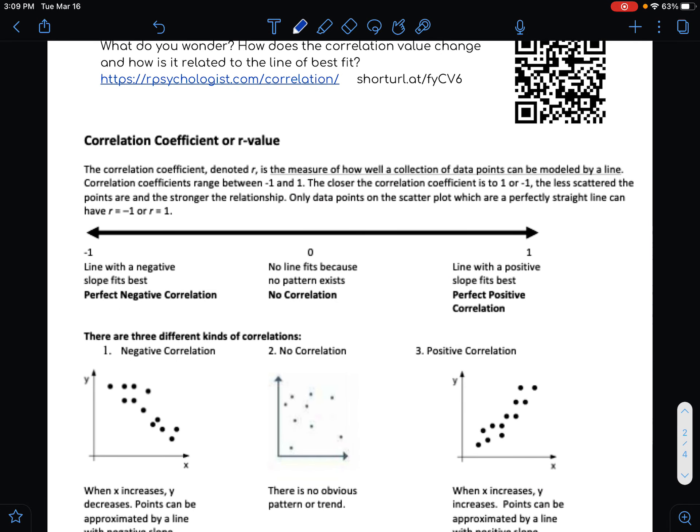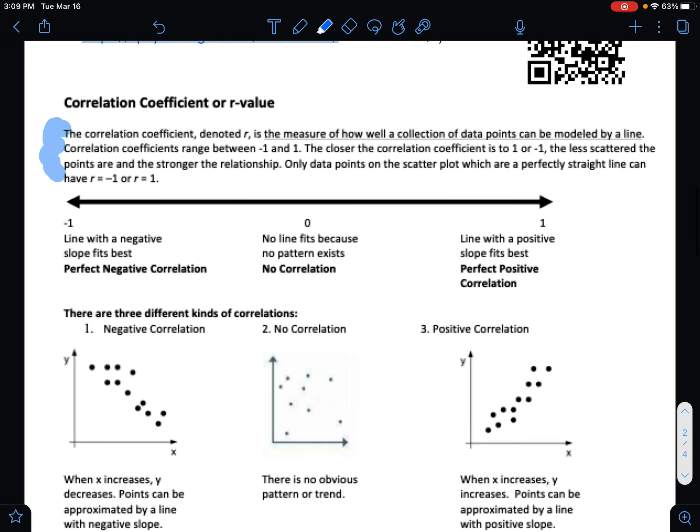The correlation coefficient, and this is some important reading right here, talks exactly through what correlation or R value is. Correlation coefficient is the same as the R value. The correlation coefficient denoted R is the measure of how well the collection of data points can be modeled by a line.